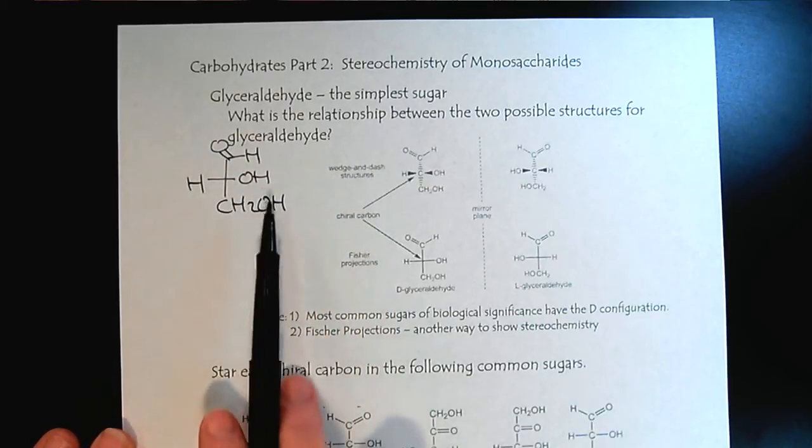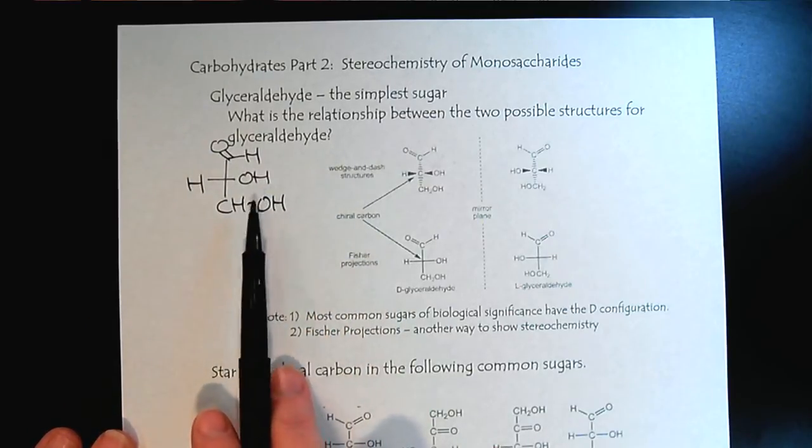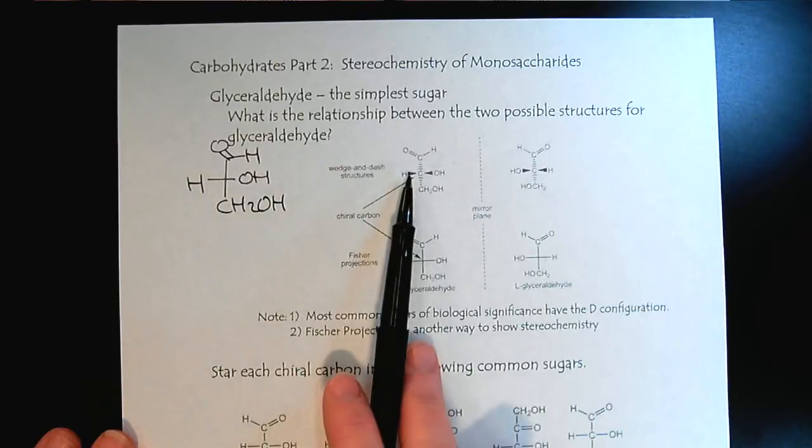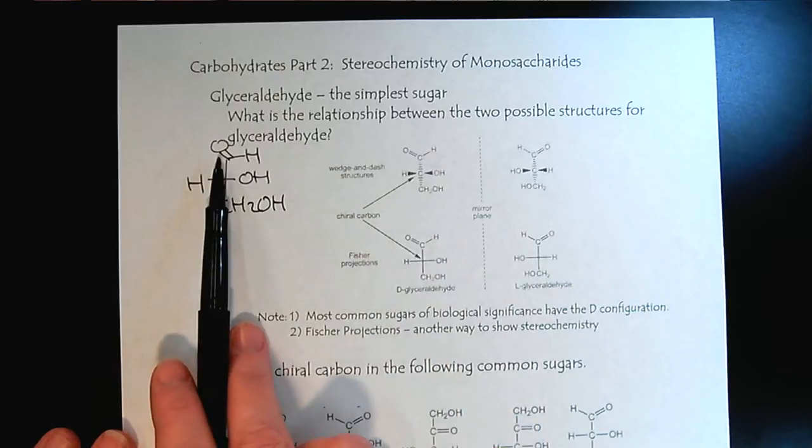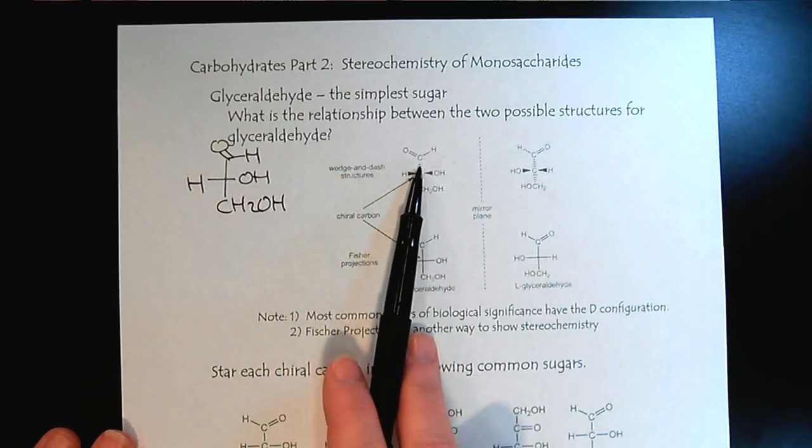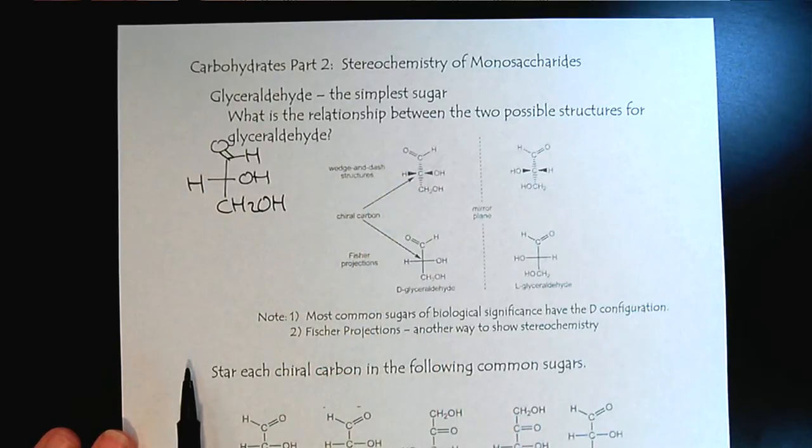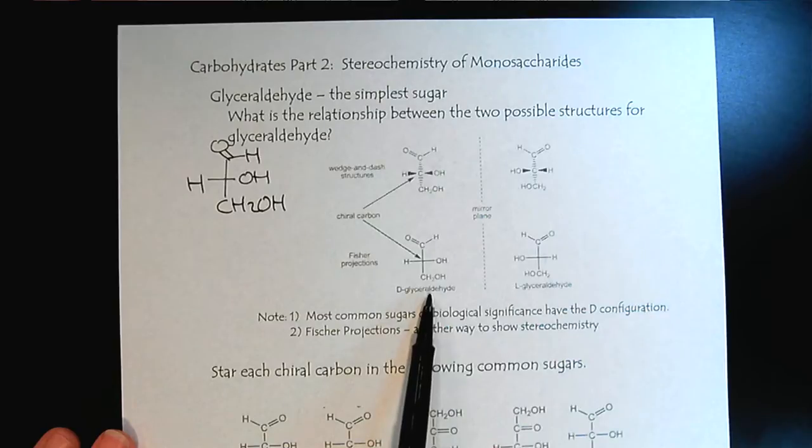We remember from amino acids that when we have the horizontals, those represent the wedges poking out at us, and the vertical axis would be the dashes going back into the paper. And so that's drawn here as well, and so this would be the D-glyceraldehyde.